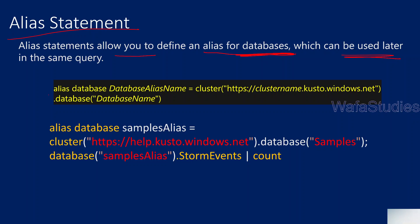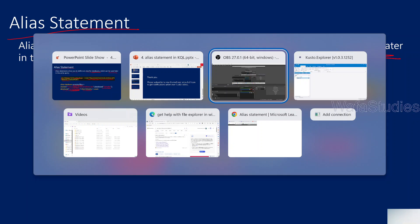So the syntax will be something like this: alias database, then the alias name of the database, whatever you want to give. Then the actual database you have to find using the cluster.database syntax — this we have discussed in our previous video as well. Once you have your alias name, you can directly use that alias name. For example, here we created an alias name called 'sample alias' for this database under this cluster, and next time we are directly pointing to the database using that alias and then pointing to a table in that database. Let me practically show you so that you will get more sense of it.